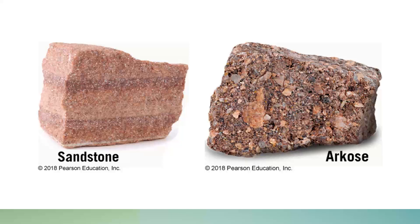When sand-sized particles form a rock, it forms sandstone. There can be lots of different kinds of sandstone, depending on the chemistry of the sand. Reddish sandstone is often called archos. Gray or green sandstone is called wacky. But you don't really have to remember all of that in this class. Sand makes sandstone.